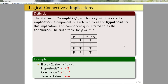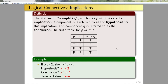One last comment: if you want to prove an implication, it's sufficient to show that if P is true, then Q is true. This is simply because in the case where P is false, the truth value of Q does not matter. And if P is true, I need Q to be true in order for the implication to be true.